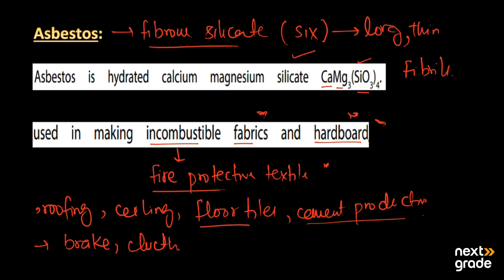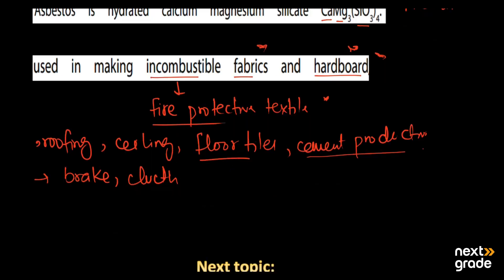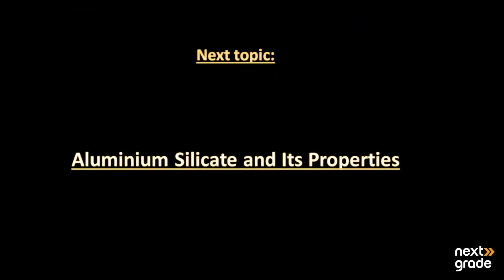I hope you all understand the topic. If you have any queries, you may ask in the comment section and I will get back to you. The next topic we will discuss is aluminum silicate and its properties — this is the last type of silicate.